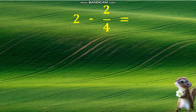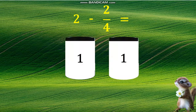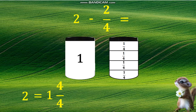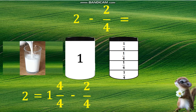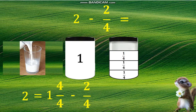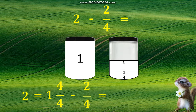To visualize two minus two-fourths, we have two liters of milk. Then rename two as a mixed number by putting partitions to have four equal parts in one liter, and it becomes one and four-fourths. Now, let's subtract two-fourths from one and four-fourths by pouring some milk into a glass, taking away two one-fourths in the diagram. What was left is one and two-fourths liters of milk, or in simplest form, equals one and one-half.